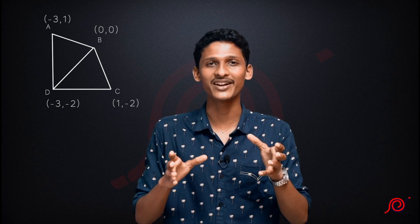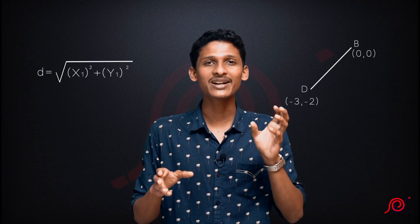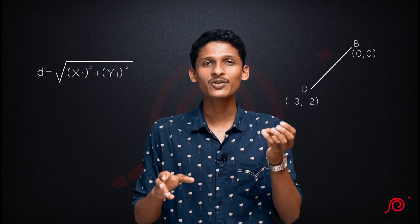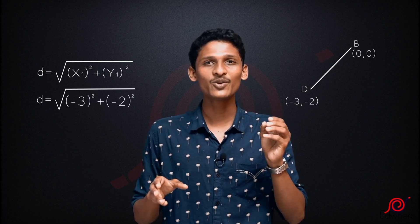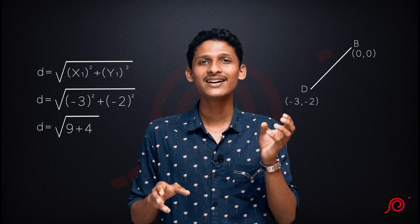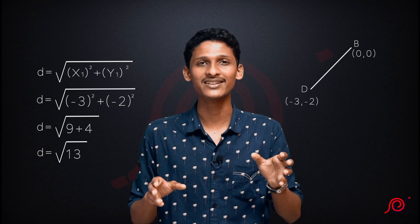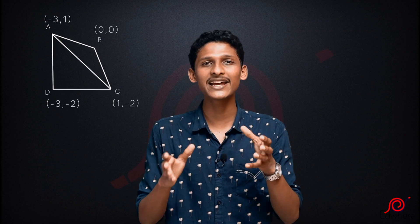Now we have the four sides. We have the length of diagonal BD. B is (0, 0) and D is (-3, -2). Since one point is the origin, we use: distance equals root of x1 squared plus y1 squared. Substituting: root of (-3)² plus (-2)² equals root of 9 plus 4, that is root 13.